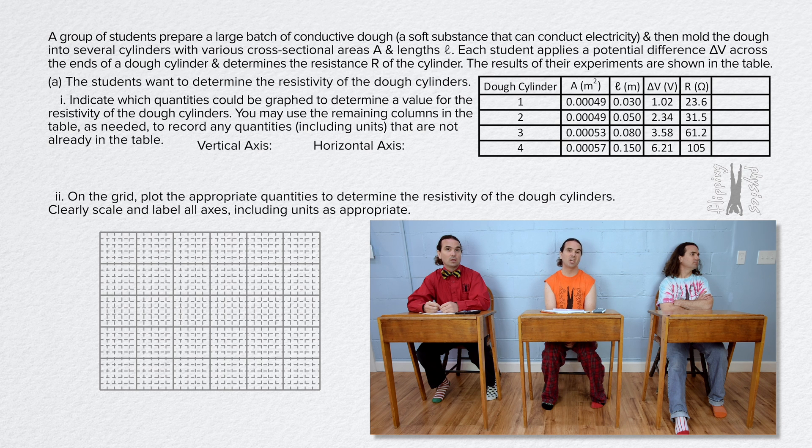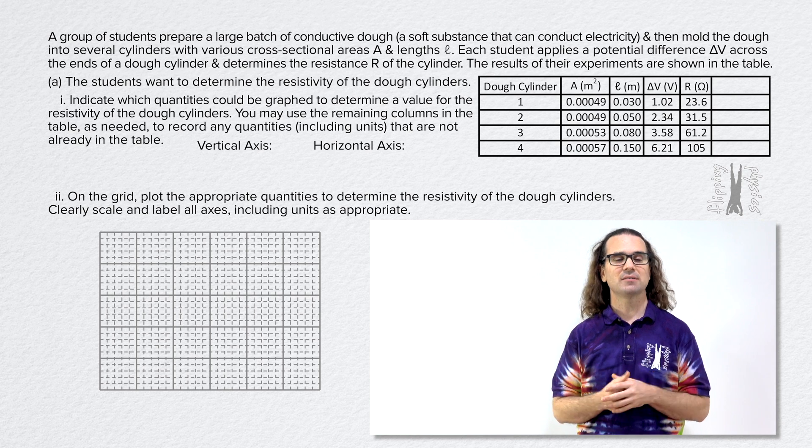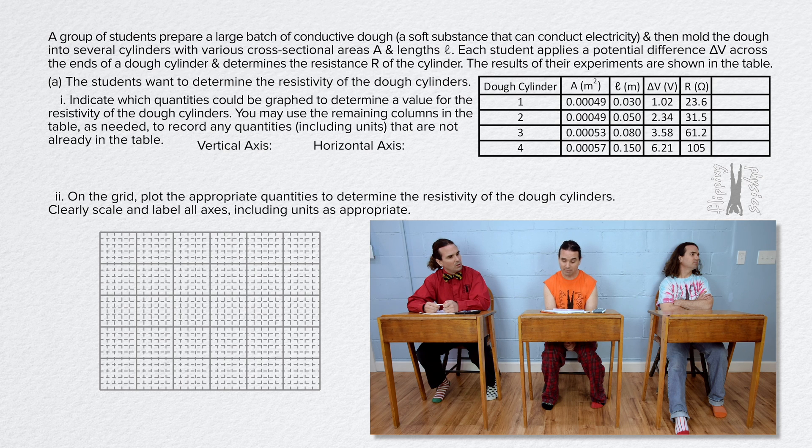Do you want me to read the whole table? No, let's not. Please summarize what you see in the table instead. Okay, in the data table we have information about four different sized dough cylinders. We know their cross-sectional areas, lengths, the electric potential differences applied across each, and the measured resistances of each dough cylinder.